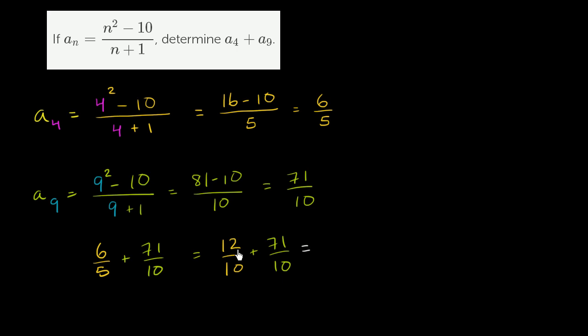Which is equal to, if I have 12 tenths and another 71 tenths, then I have 83 tenths. And we're done.